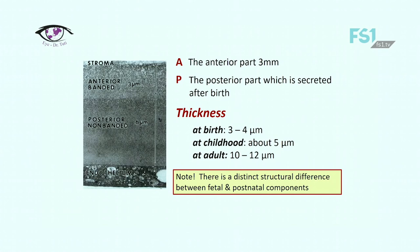Beginning in utero at the 8-week stage, endothelial cells continuously secrete Descemet's membrane. The anterior 3 mm secreted prior to birth has a distinctive banded appearance when viewed by electron microscopy, as you can see in this slide. Descemet's membrane produced after birth, which is the posterior part, is unbanded and has an amorphous ultrastructural texture. The anterior banded region, labeled A in this slide, is secreted by endothelial cells during fetal development and is more highly organized than the posterior region, labeled P, which is secreted after birth.